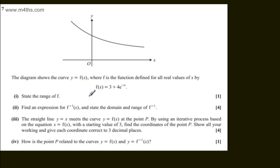This is question number 7. We're told the diagram shows the curve y equals f of x, where f is the function defined for all real values of x by f of x equals 3 plus 4e to the minus x.